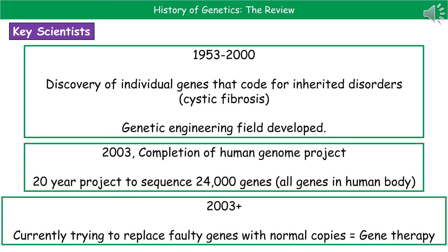Since Watson and Crick gave us the double helix structure of DNA in 1953, in the years that followed up to the year 2000 we had different individual genes being discovered that coded for certain inherited disorders, things like cystic fibrosis. We also saw the development of the field of genetic engineering. The next key event was in 2003 when we completed the Human Genome Project — an incredibly long 20-year project with the goal of sequencing all of the genes in the human body, which turned out to be 24,000 genes.